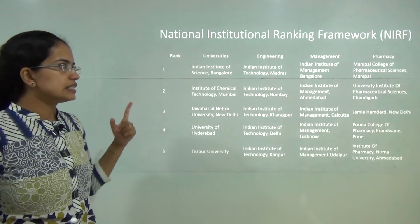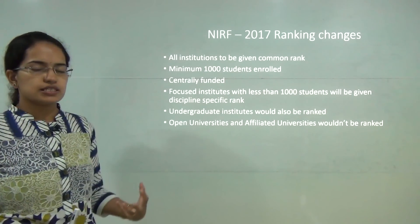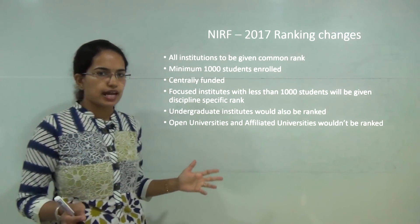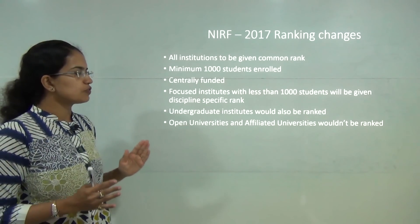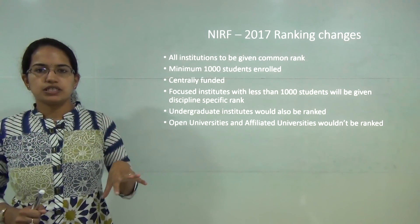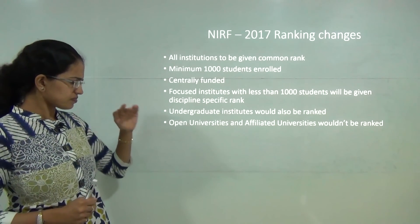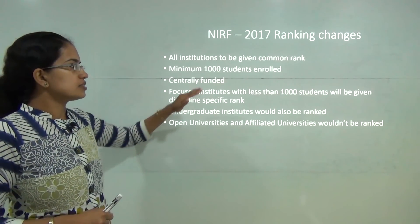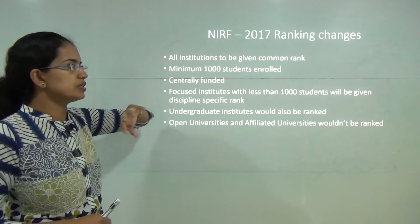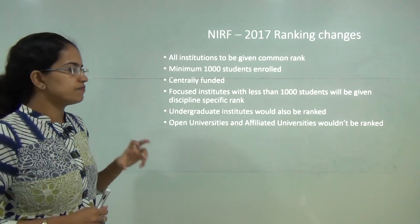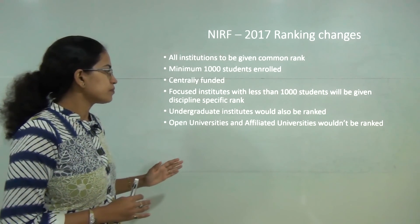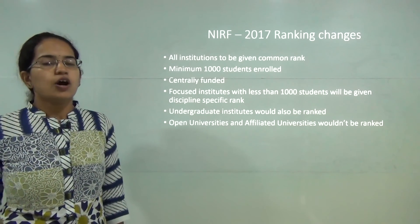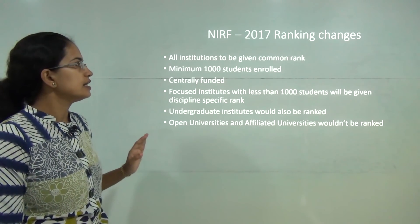However, in 2017 there was a need to understand changes in the ranking framework. Rather than a separate ranking for each discipline, there should be a common ranking. For 2017 all universities with a minimum of 1000 students enrolled would be eligible, and all centrally funded universities and institutions would be eligible. Highly specialized institutions with less than 1000 students would have a separate discipline-specific ranking. This program also includes ranking for undergraduate institutions, though open universities and affiliated universities won't be ranked under NIRF.